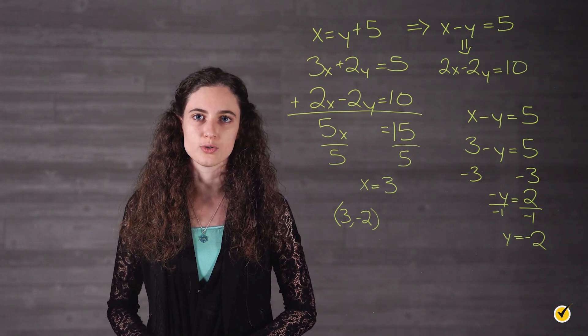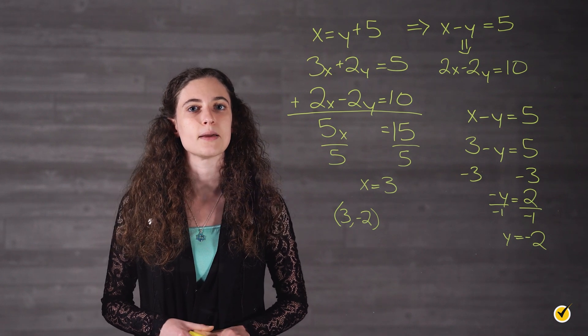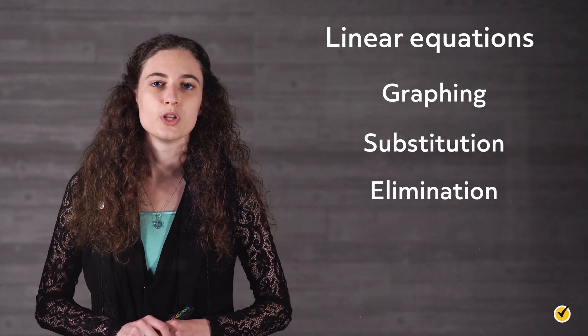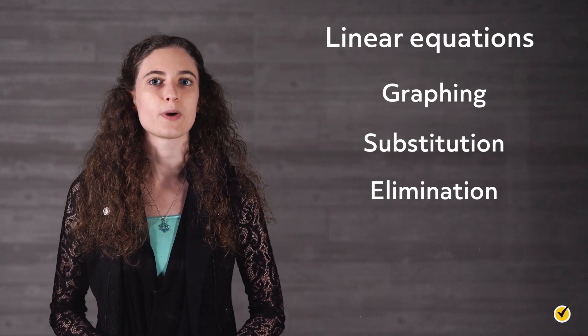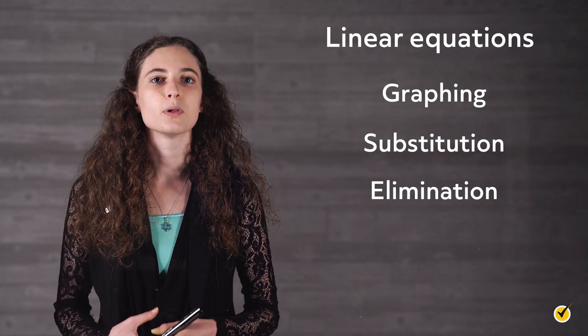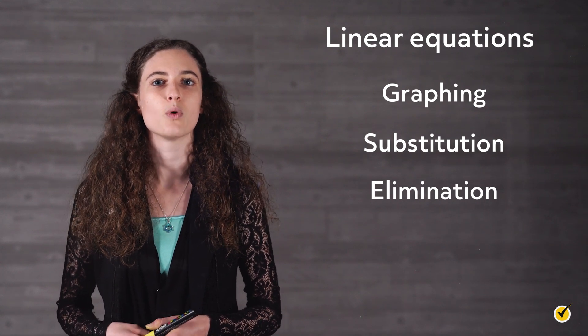However, there are times when you would need to subtract the two equations instead — for example, in a situation where you had two variable terms that were the same, such as 3y and 3y. Let's quickly review what we learned. Linear equations describe a straight line on a graph and are usually seen in slope-intercept form, y equals mx plus b. We can solve systems of linear equations using one of three methods: graphing, substitution, or elimination. With graphing, manipulate both equations into slope-intercept form, graph them, and find the intersection point. Substitution involves solving for one variable and plugging it into the other equation. Elimination means adding or subtracting the equations to cancel out one variable. That's all for this review — thanks for watching, and happy studying!